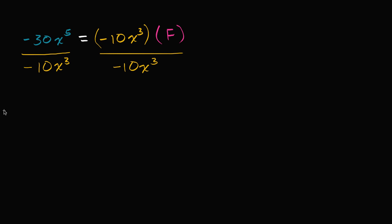What does that leave us with? On the right-hand side, we're multiplying by negative 10x to the third and then dividing by negative 10x to the third. Multiplying by something and then dividing by that same thing is the same as multiplying by one — they just cancel out. So we are just going to be left with f on the right-hand side, which is exactly what we wanted.